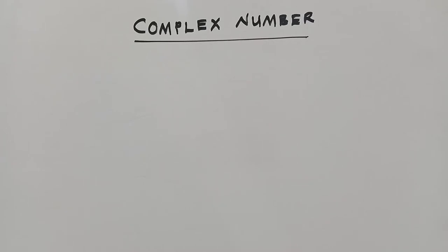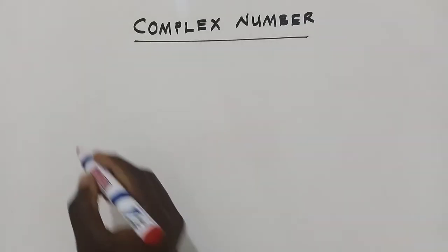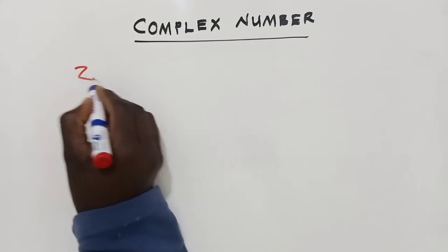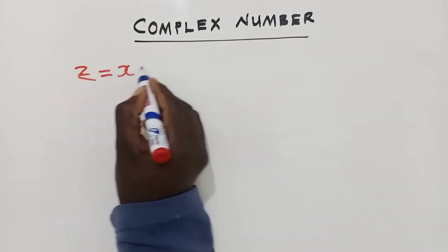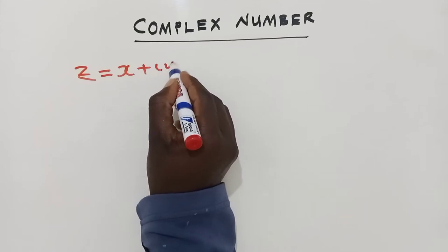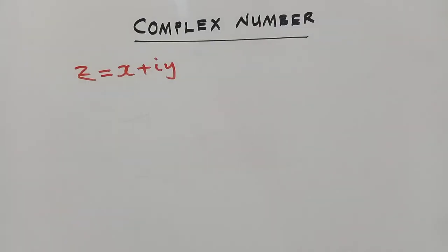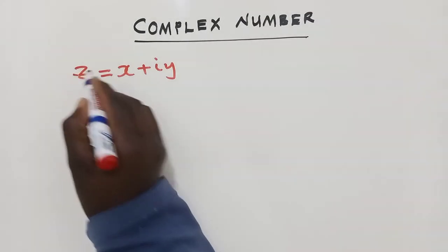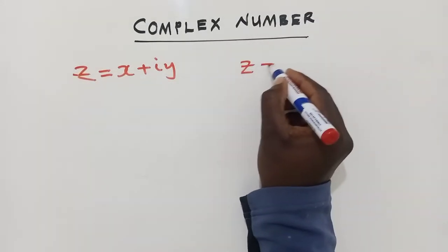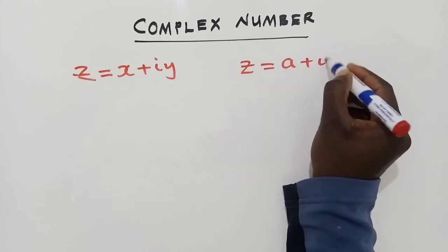So the first thing that we must look at is the definition. What is a complex number? A complex number is simply a number which is written in the form Z equals X plus iY. So this is how a complex number looks like. Or you can say Z equals A plus iB.